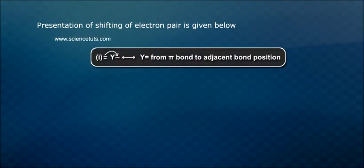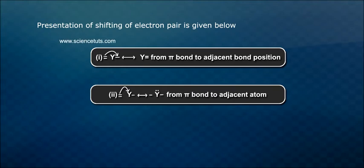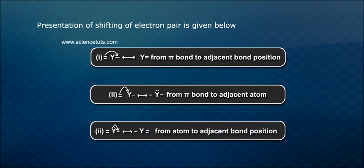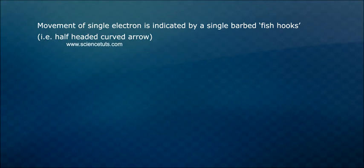Types of electron pair shifting: 1. From pi-bond to adjacent bond position. 2. From pi-bond to adjacent atom. 3. From atom to adjacent bond position. Movement of a single electron is indicated by a single-barbed fish hook, that is, a half-headed curved arrow.